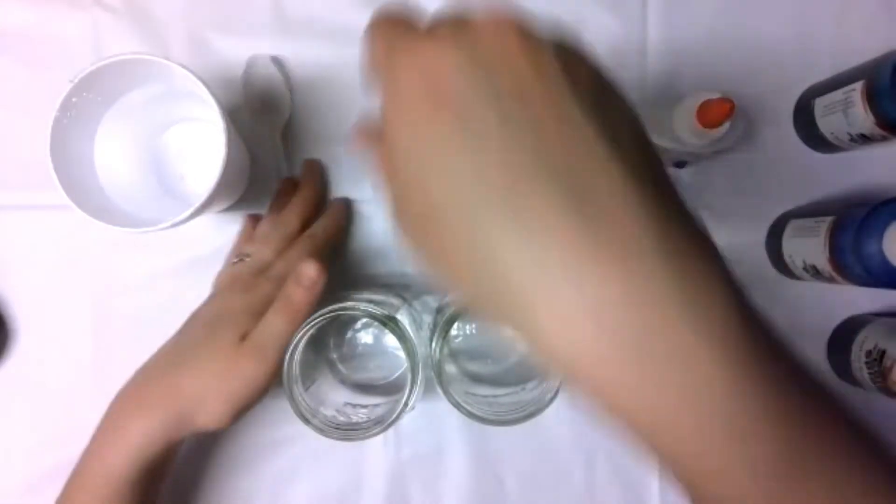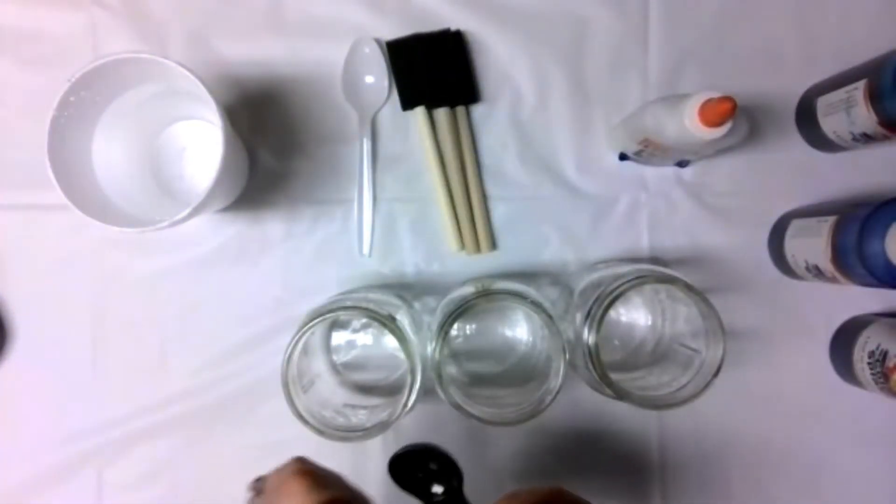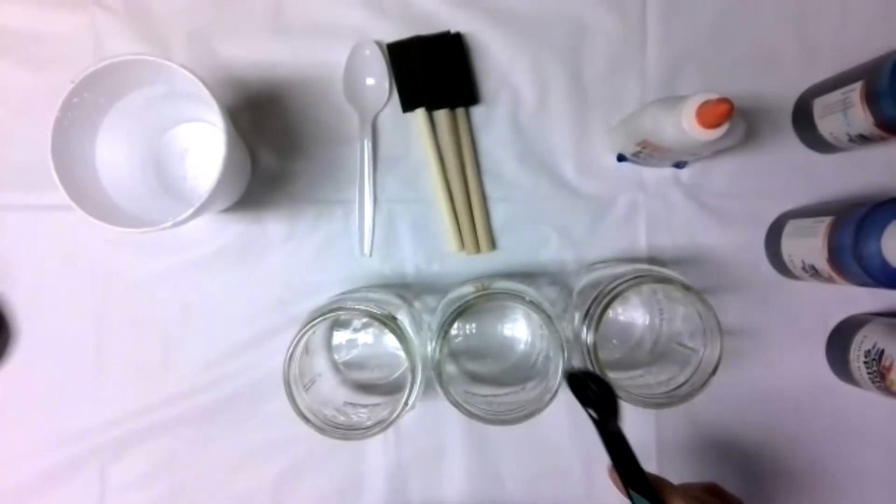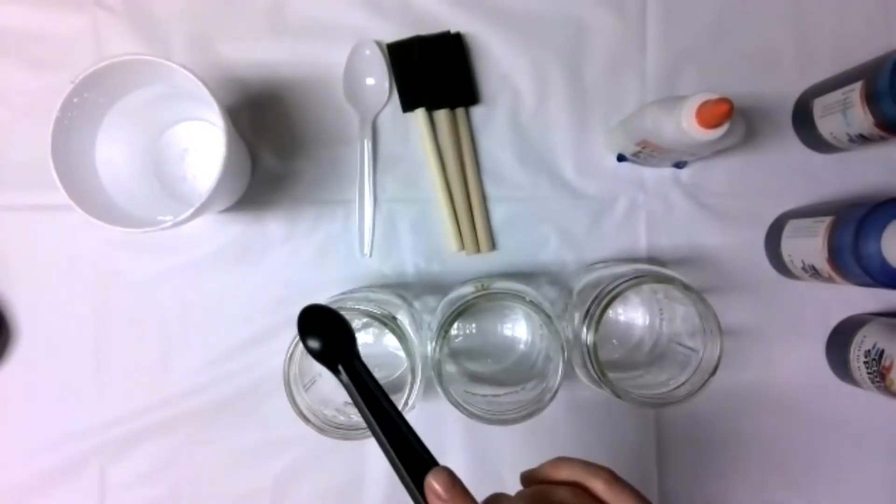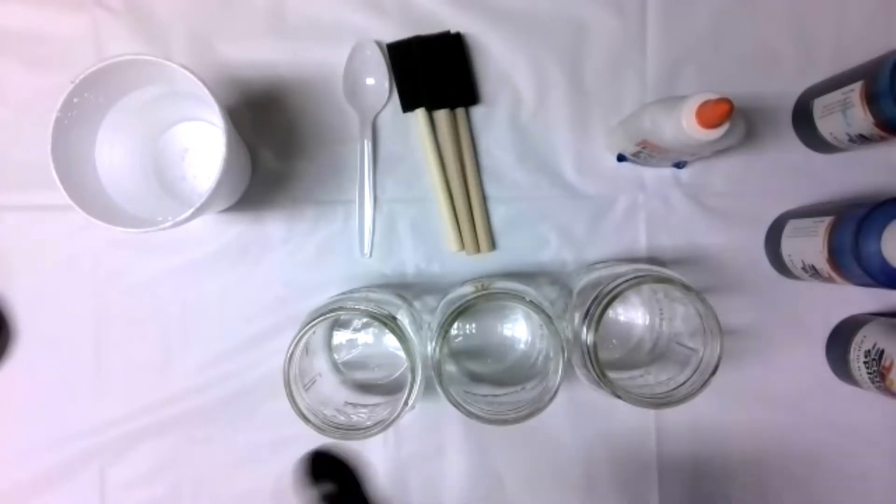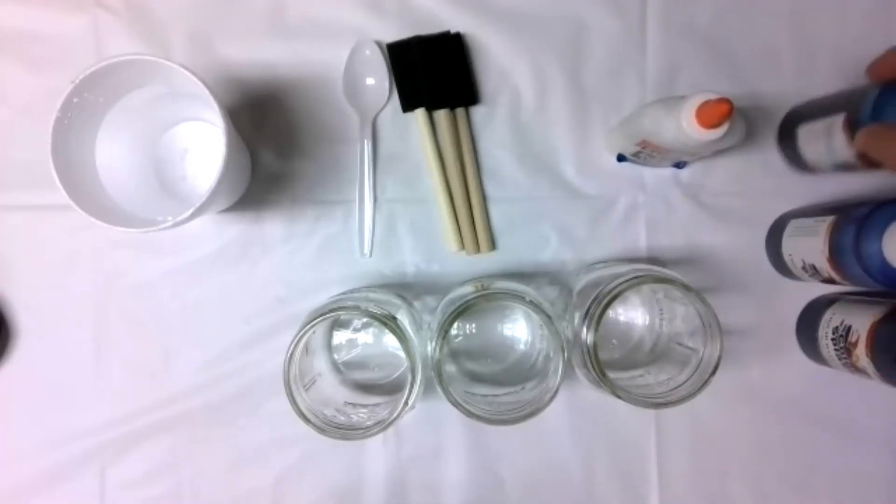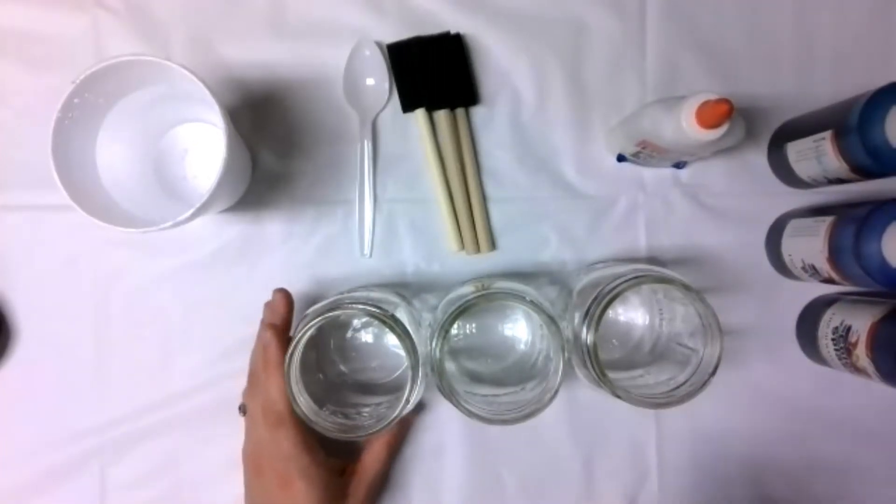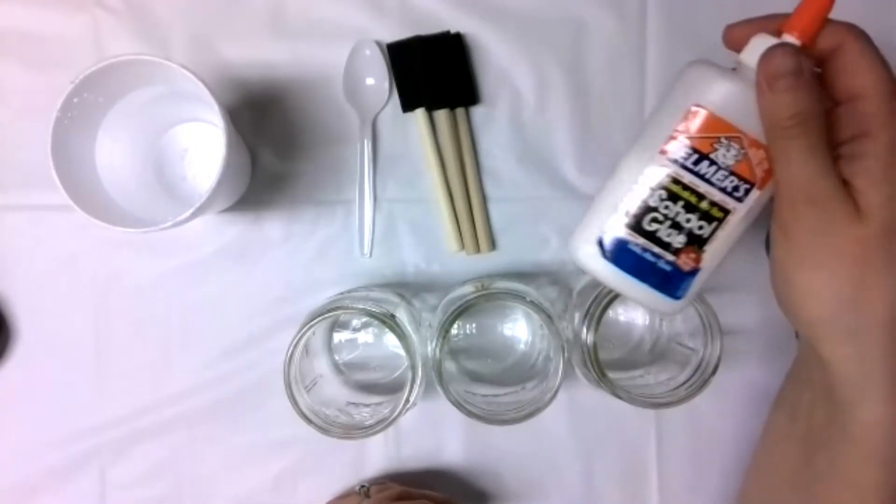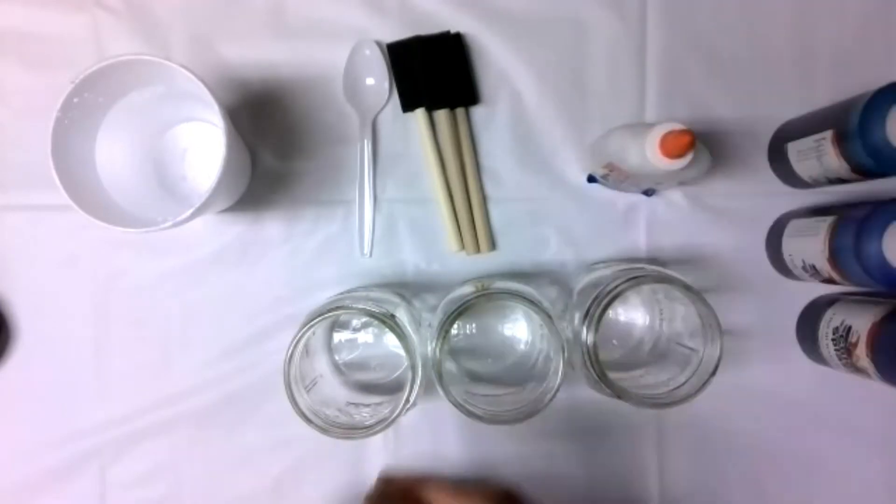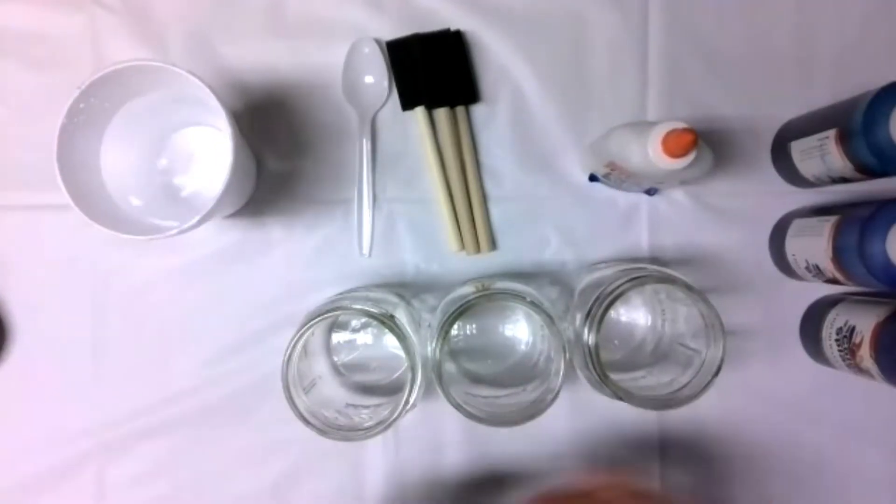So for this the simplest way since I have one measuring spoon I am going to measure out the water first for each jar and then I'm going to measure out the glue for each jar and then I will put in the watercolor paint. For each one what you will need is one teaspoon of Elmer's glue, one and a half teaspoons of water, and then three drops of the liquid watercolor paints or food coloring.